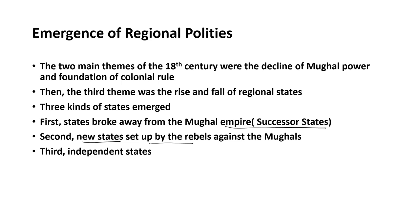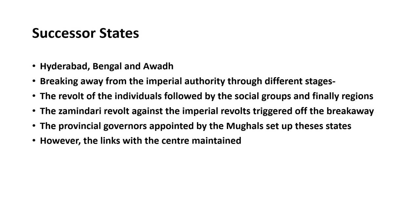The third came to be known as independent states. So the 18th century witnessed three different types of states following the decline of the Mughal Empire: successor states, new states, and independent states. The three prominent successor states included Hyderabad, Bengal, and Awadh.